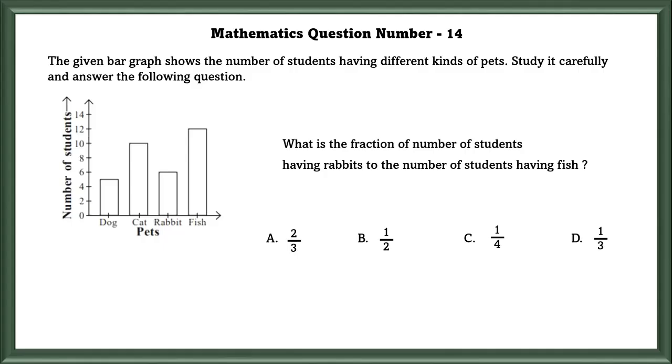Mathematics Question No. 14: The given bar graph shows the number of students having different kinds of pets. Study it carefully and answer the following questions. Question No. 1: What is the fraction of number of students having rabbits to the number of students having fish? Number of students having rabbits is 6. Number of students having fish is 12.